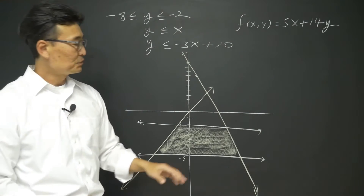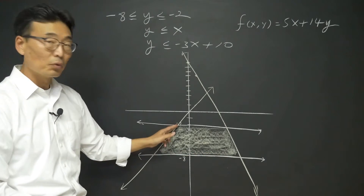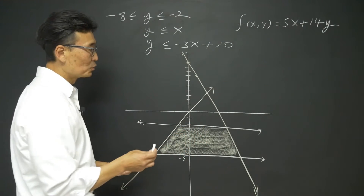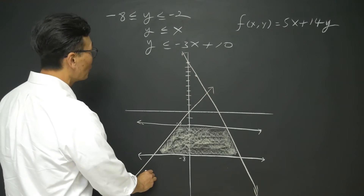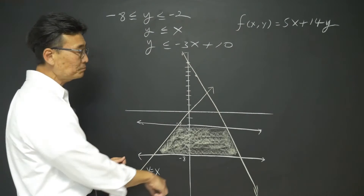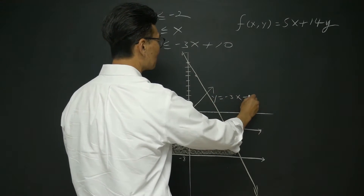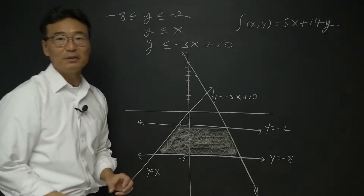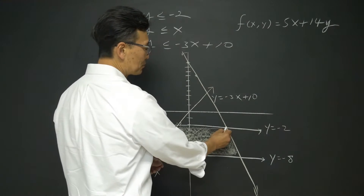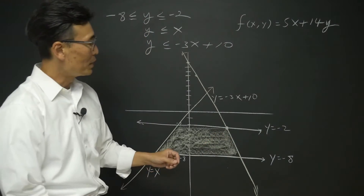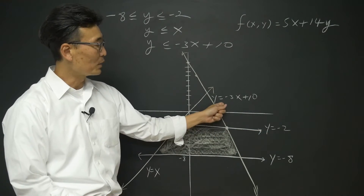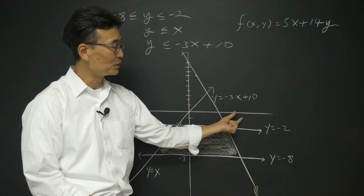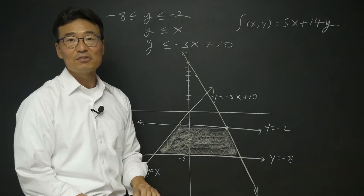Next, we need to find these four intersecting points, or four vertices of the shaded region. I'm going to write down the equations: y equals x, y equals negative 3x plus 10, y equals negative 2, and y equals negative 8. Let's begin by finding this point, where y equals negative 2 and y equals negative 3x plus 10 meet. We're going to substitute these two equations to solve for x and y.